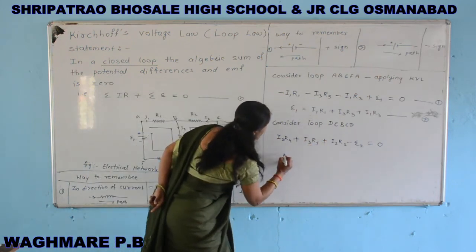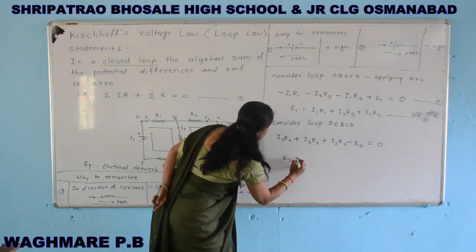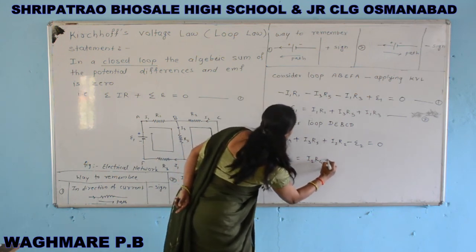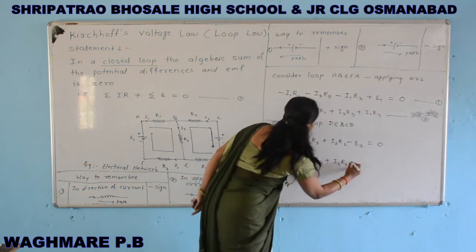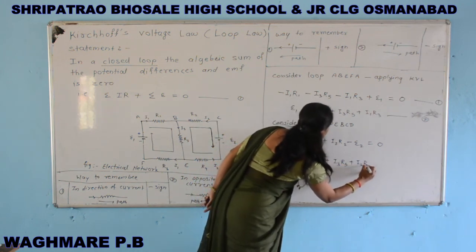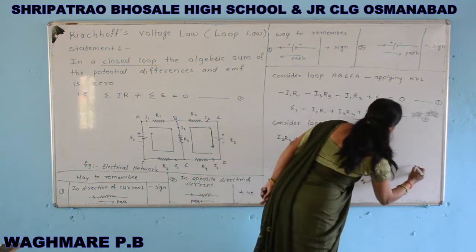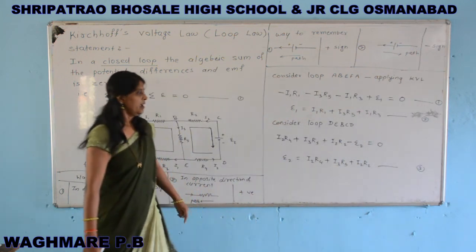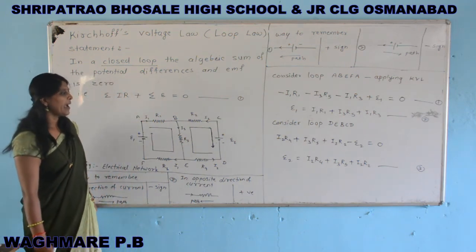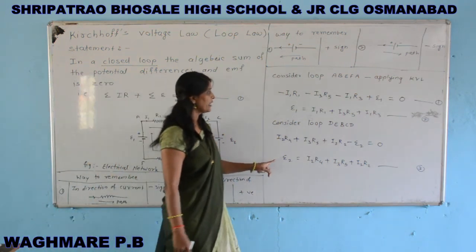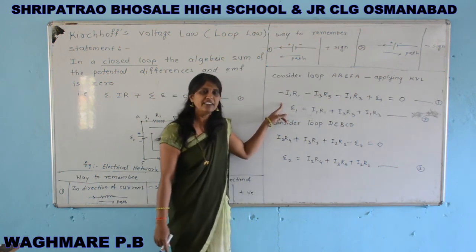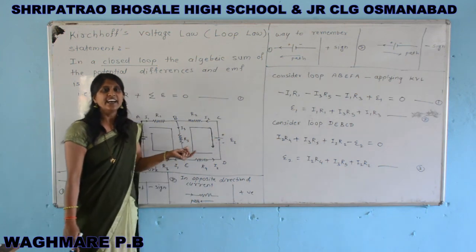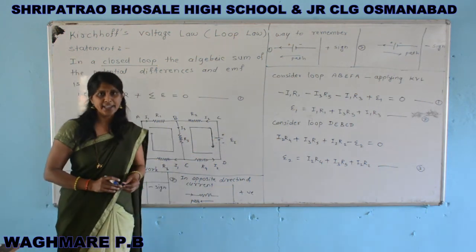Rearranging, equation 2 is: E2 = I2·R4 + I3·R5 + I2·R2. This is the Kirchhoff's voltage law. By using KVL, we can find out the EMF of a cell when we know the current and the resistances connected in the circuit. Thank you.